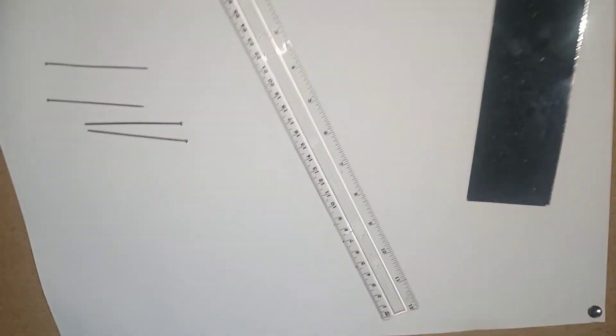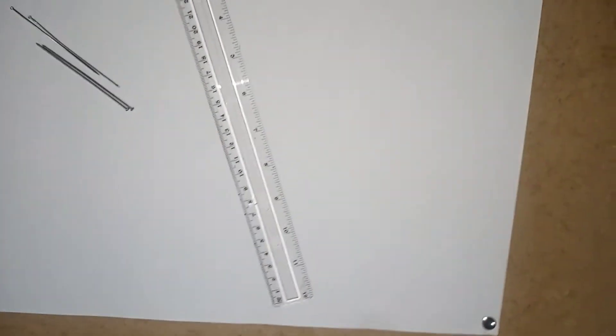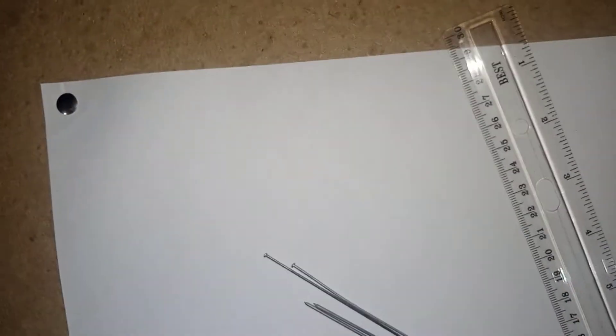So let us go straight to the experiment. The first thing we're expected to do is to fix the drawing paper firmly. You can see where the thumb tacks are provided. Fix the drawing paper on the drawing board.